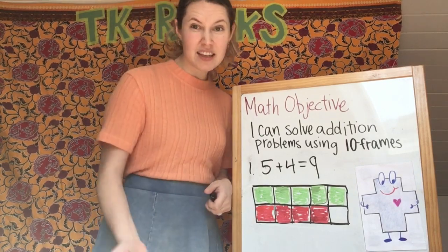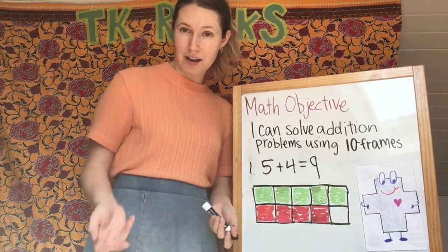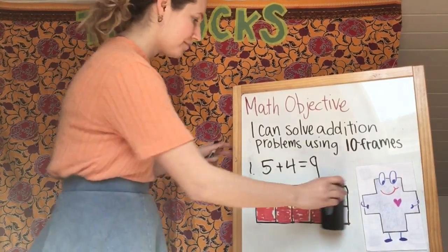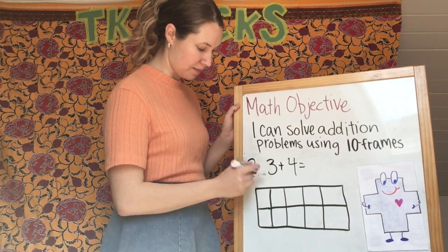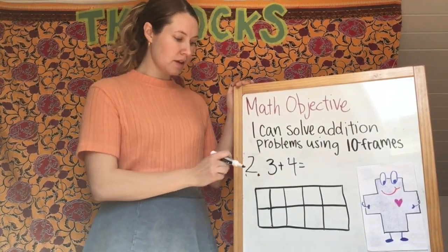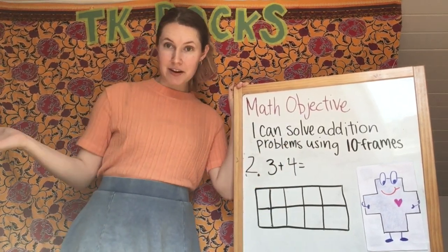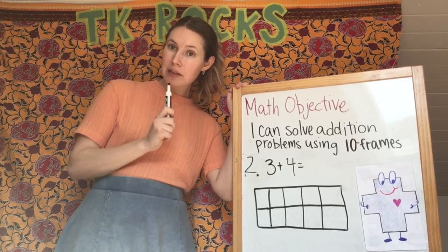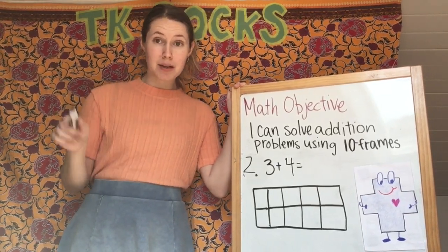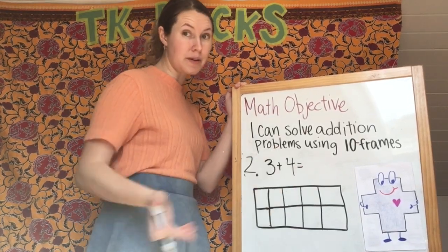So let's say that you don't have different colored markers at home — how could we do our ten frames? Let's talk about that. I'm going to give you another problem and we'll see how we can do it that way. So here's our next problem — number two: three plus four equals. Now I need to get started on solving this problem, but I only have one marker. So in order to fill in my ten frame, I'm going to make some different designs to help me differentiate between the two numbers.